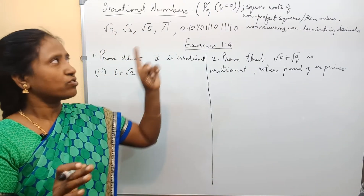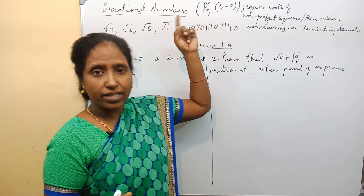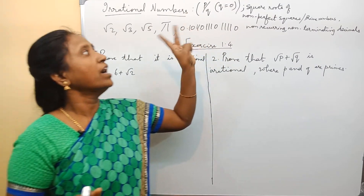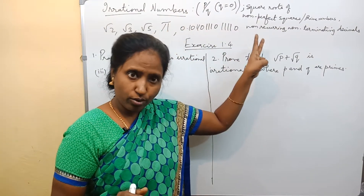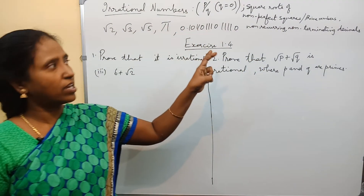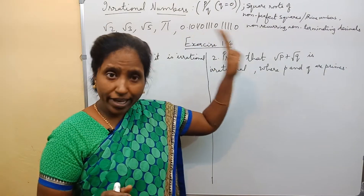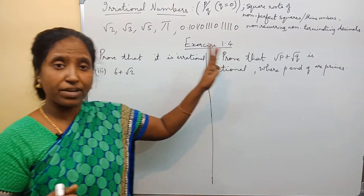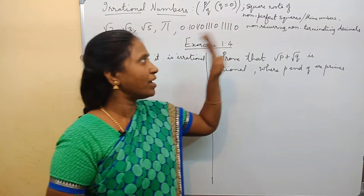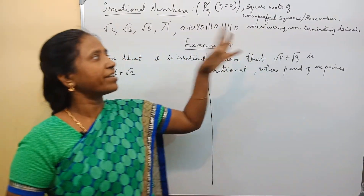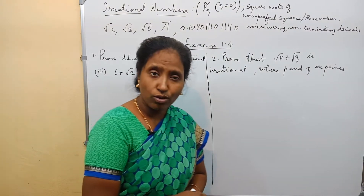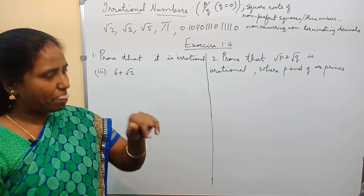So, first one is: if the denominator is 0, that is an irrational number. Second, the square root of non-perfect squares is an irrational number. Square root of prime numbers is also an irrational number. And non-recurring, non-terminating decimals are also irrational numbers.